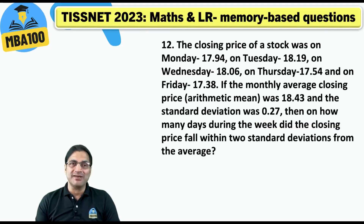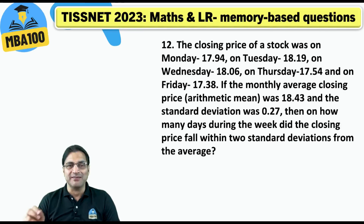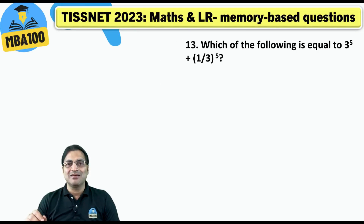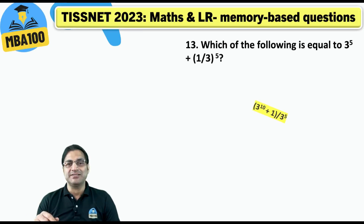Those people who are not comfortable with the basics of statistics would have left the question after reading half of it. But it was a very simple question and the answer is 3. Which of the following is equal to 3 to the power 5 plus 1 by 3 to the power 5? How can you get a question easier than this?